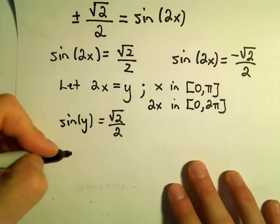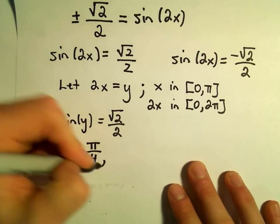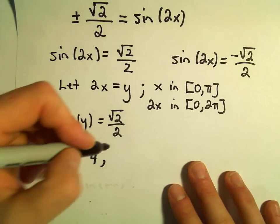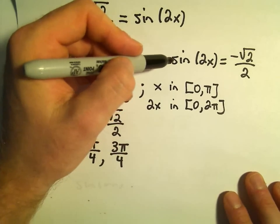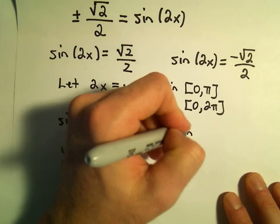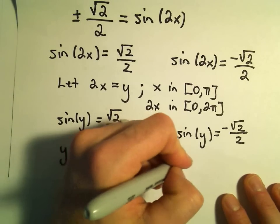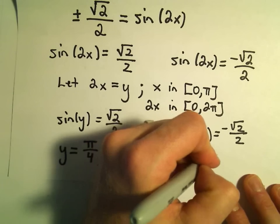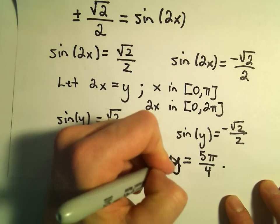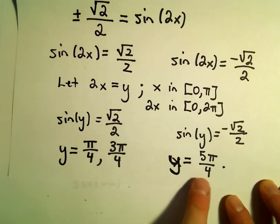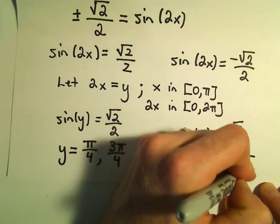In the interval 0 to 2π, sine equals square root of 2 over 2 at the angle π over 4 and also at 3π over 4. For the other equation, sine of y equals negative root 2 over 2 — this happens in quadrants 3 and 4, giving y equals 5π over 4 or y equals 7π over 4.